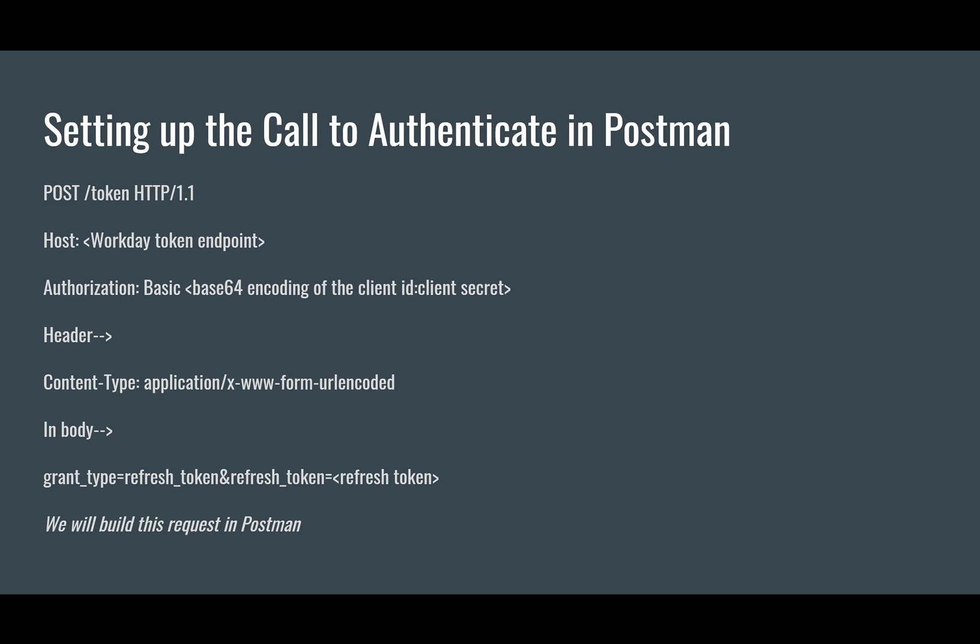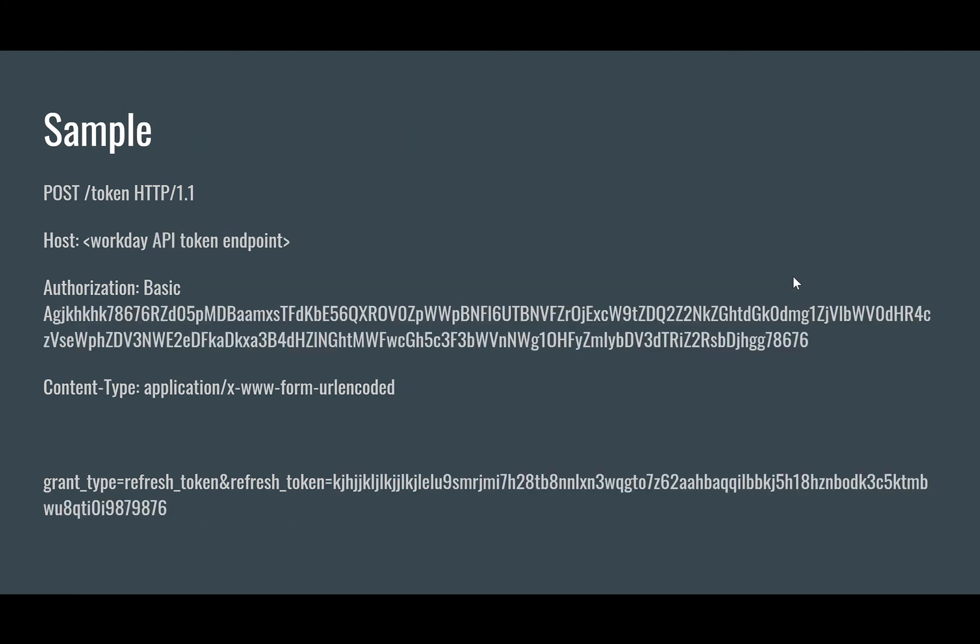In the header section you need to provide the Content-Type of application/x-www-form-urlencoded — it is necessary that you provide this header. In the body, you will pass grant_type equal to refresh_token, and refresh_token equal to the refresh token value that you got when registering your API client.